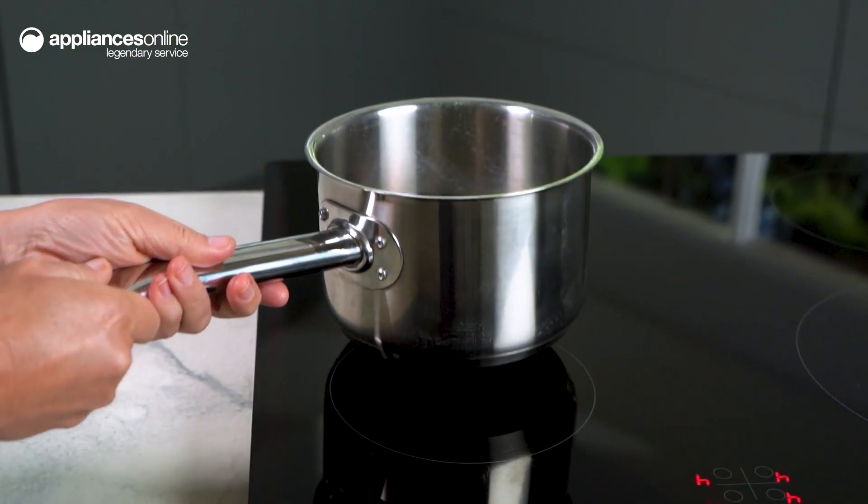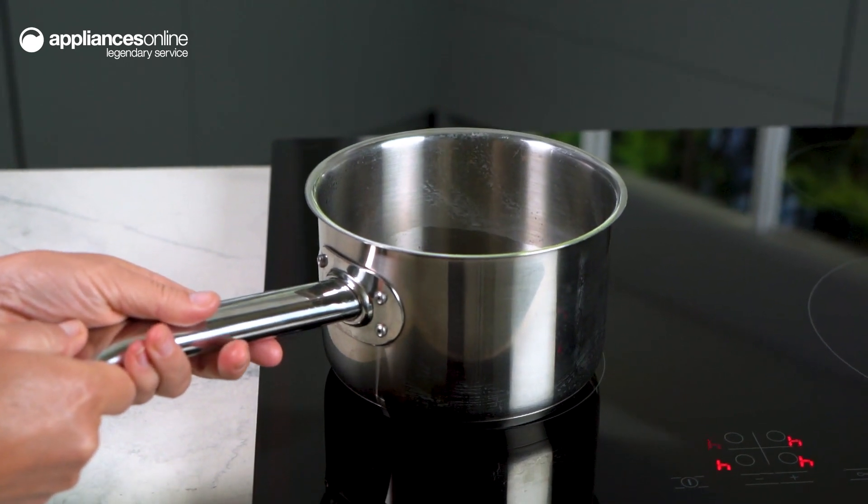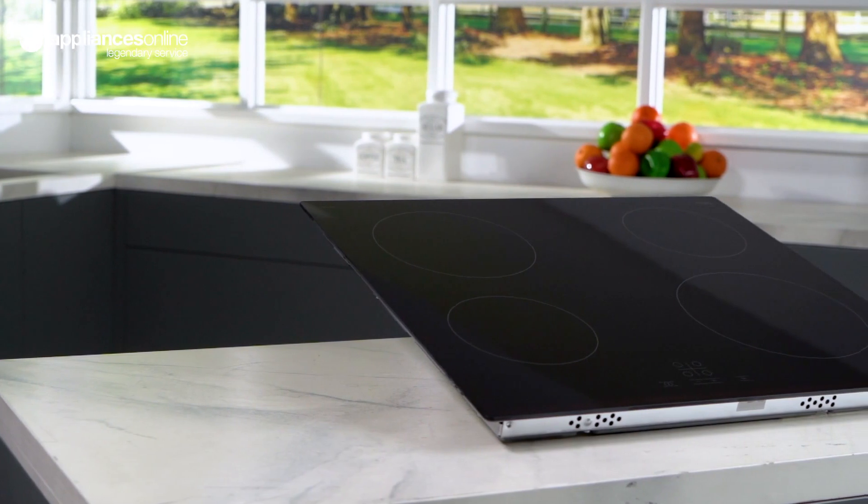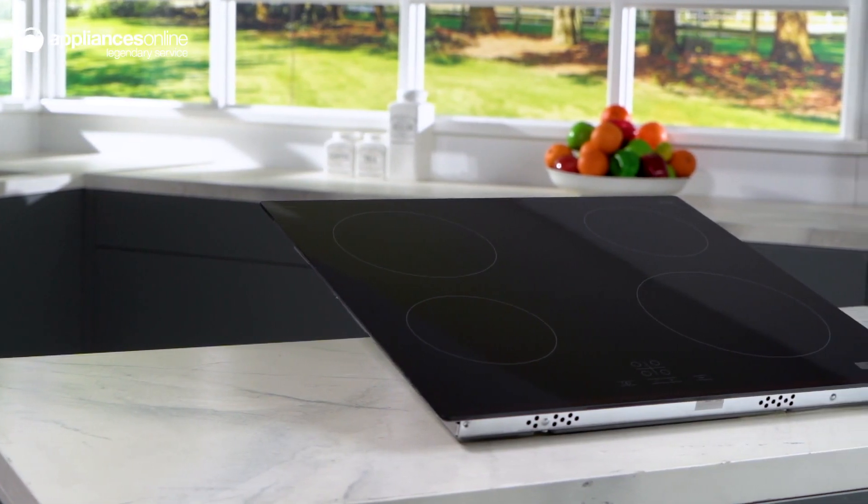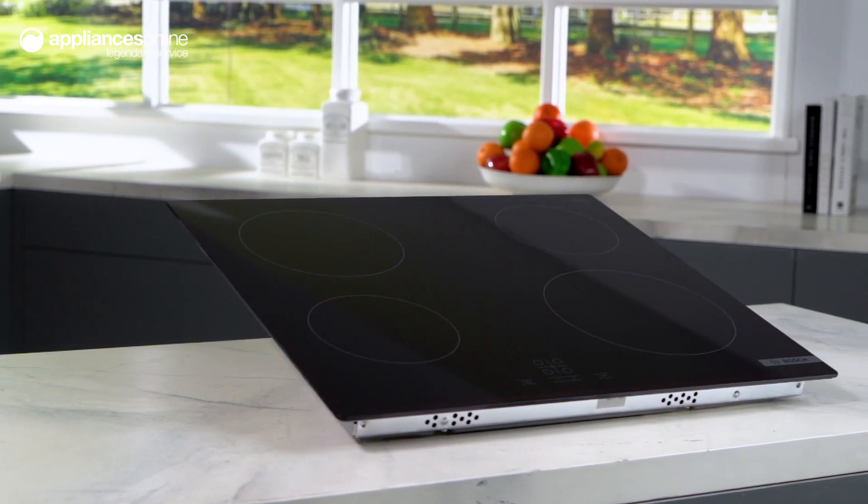So whether you're a seasoned chef or you're just starting out, the 60cm Serie 4 Ceramic Electric Cooktop from Bosch is the perfect choice for anyone who loves to cook. With its innovative features, safety functions and easy to clean surface, you'll wonder how you ever managed without it. Thanks so much for watching.